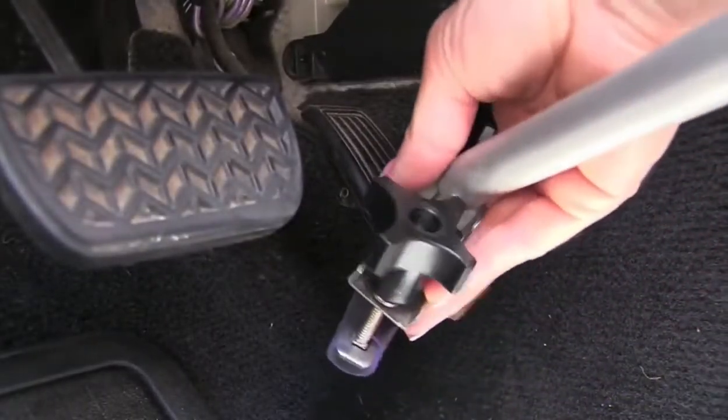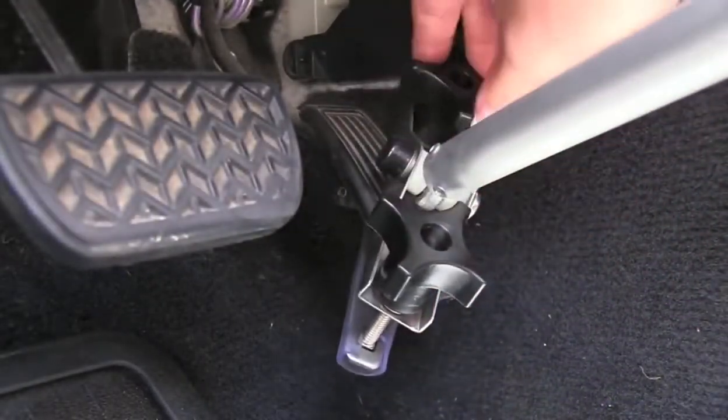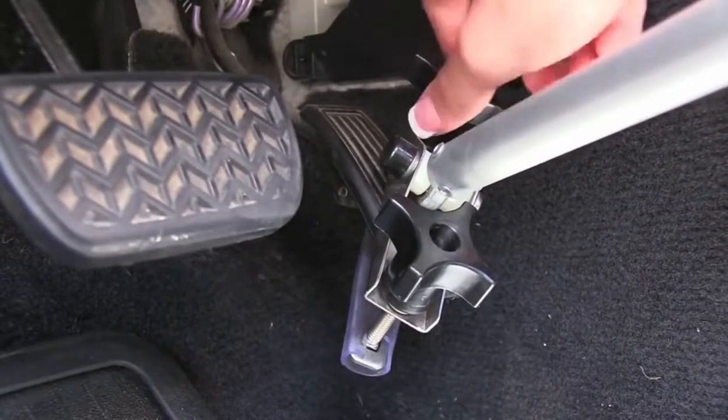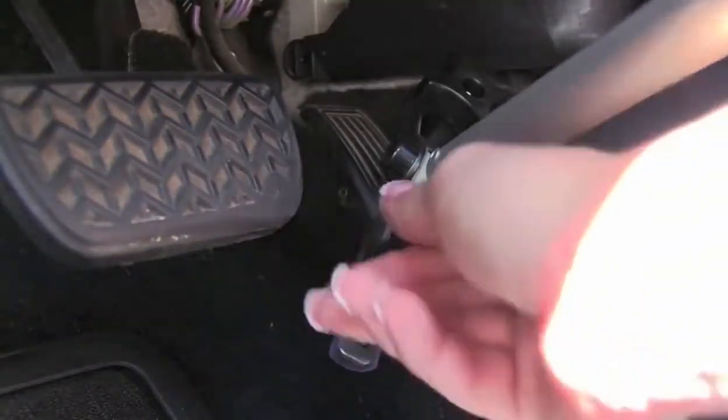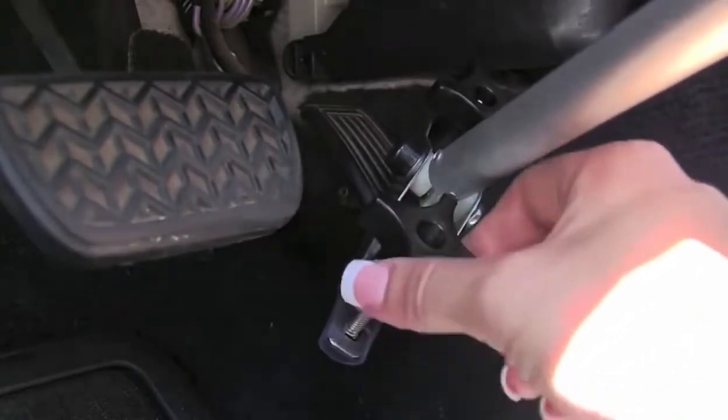Here we are going to take the throttle leg assembly and attach it to the gas pedal. Be sure to have it sitting at an angle and tighten the knobs so that it sits securely in place.